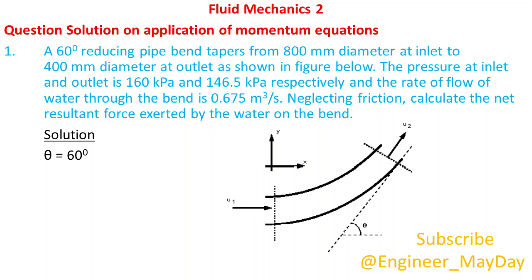Solution. Theta equals 60 degrees. D1 equals 0.8 meters. D2 equals 0.4 meters. P1 equals 160 times 10 to power 3 newtons per square meter. P2 equals 146.5 times 10 to power 3 newtons per square meter. Q equals 0.675 cubic meters per second.